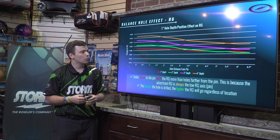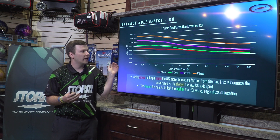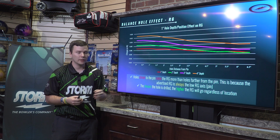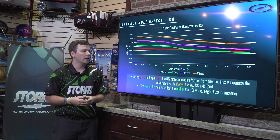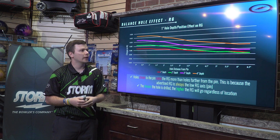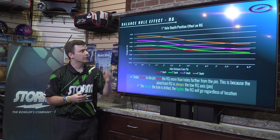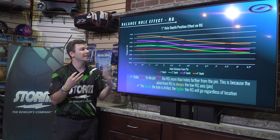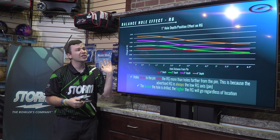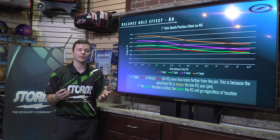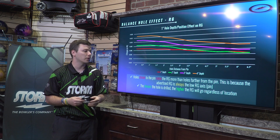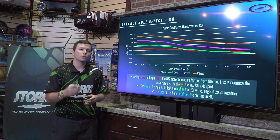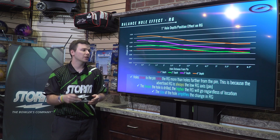The red line is the lowest line on average — and the red line is also the shallowest hole at one inch. Take a look at the orange line, which is our deepest hole at four inches — approaching the center of the ball significantly. We raise the RG value the highest regardless of where that hole is at the surface of the ball, because it's deeper.